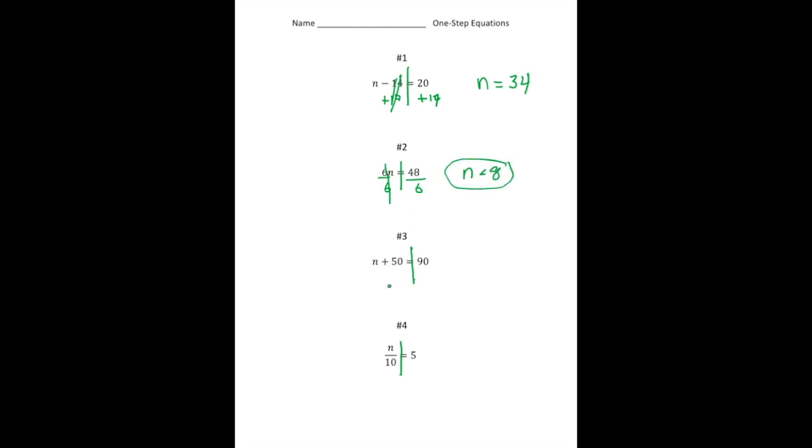Number 3. n plus 50 equals 90. Well, the opposite of adding 50 is take away 50. So take away 50. And take away 50. So n is going to equal 90 take away 50 is 40. And again, those cancel out.